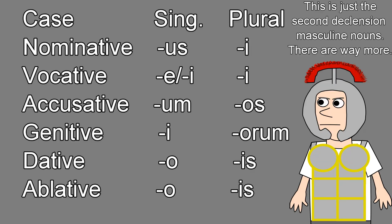Why does Latin have so many different plural endings? Because in Latin there are three genders and six cases, many of which have different plural endings from each other.